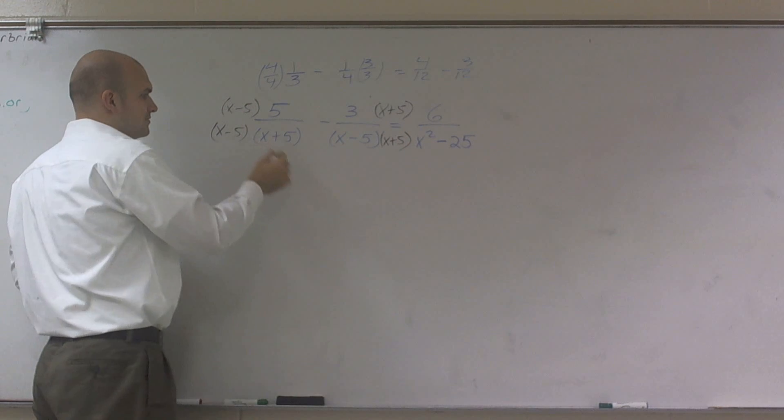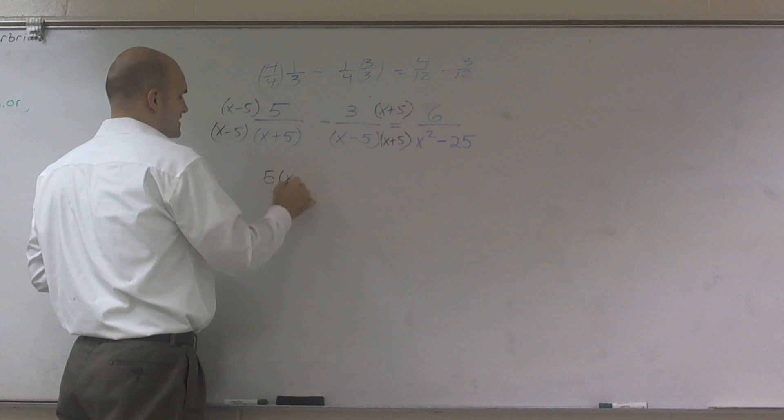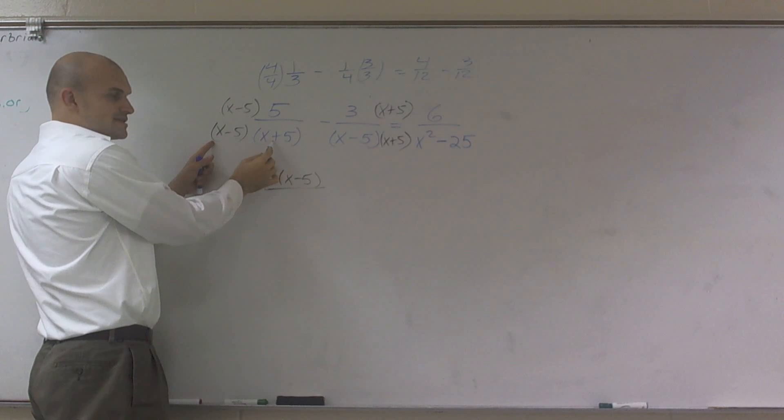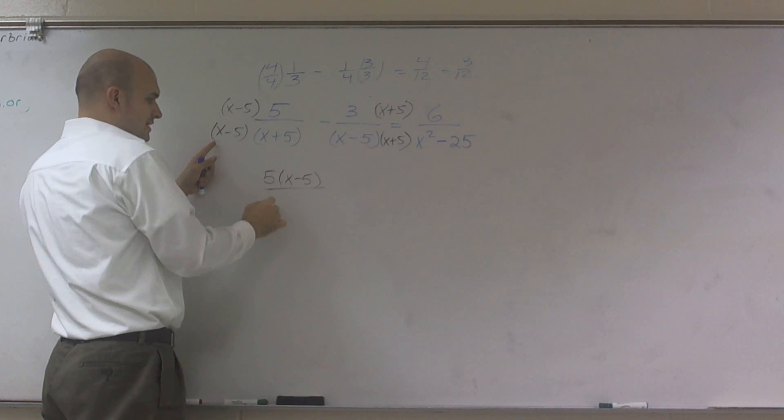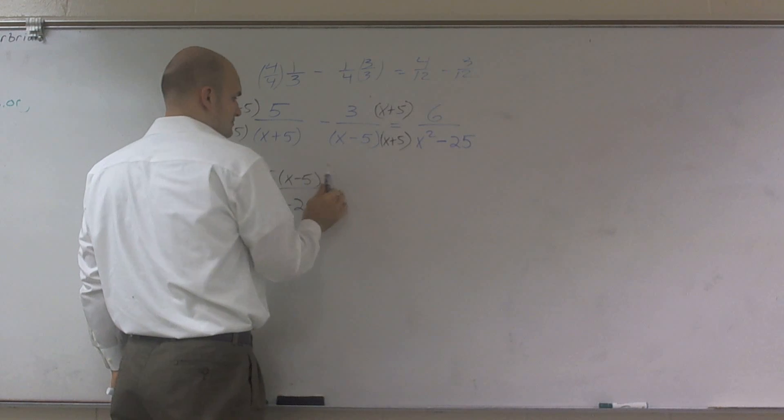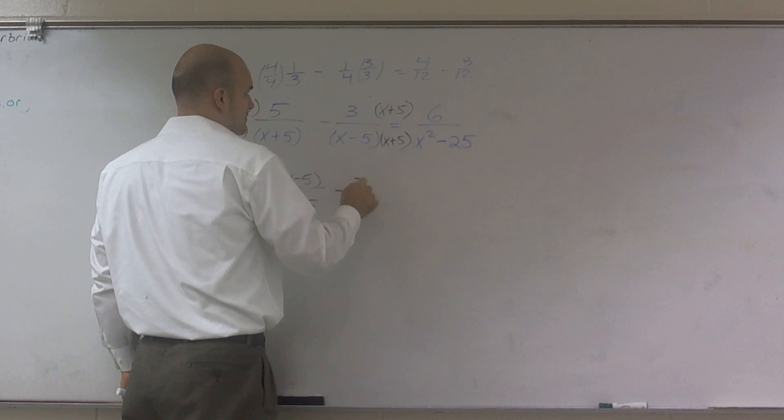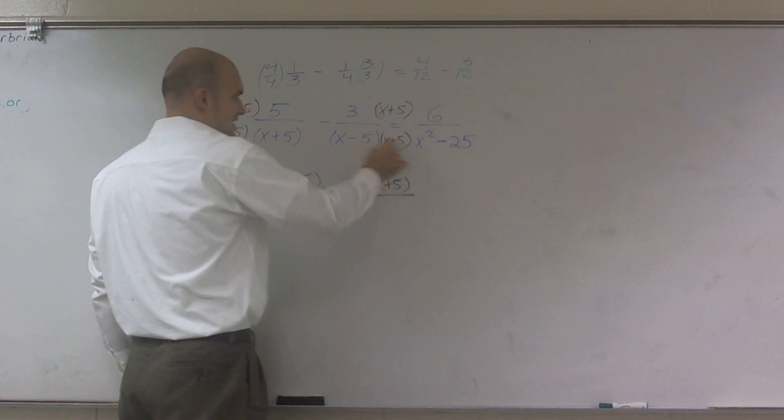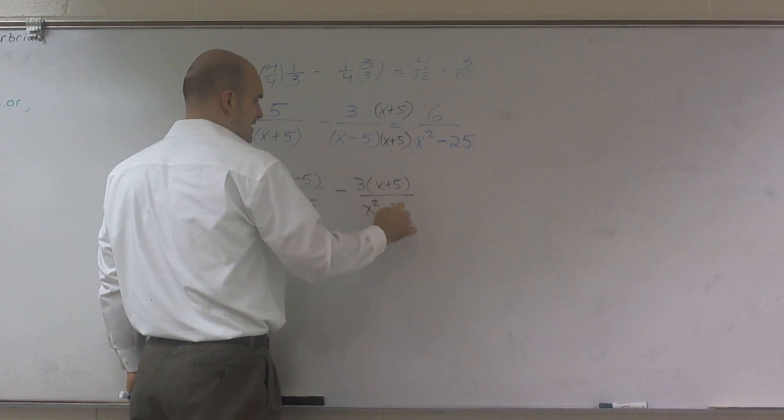So then what I'll have now is I have 5 times x minus 5 all over. Now I notice this is a difference of two squares. So what I can do is I can write it as x squared minus 25. Equals, I'm sorry, minus 3 times x plus 5 all over. Again, this is going to be the same denominator, x squared minus 25.